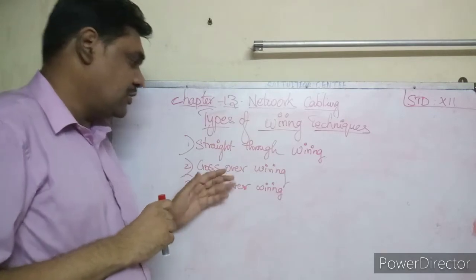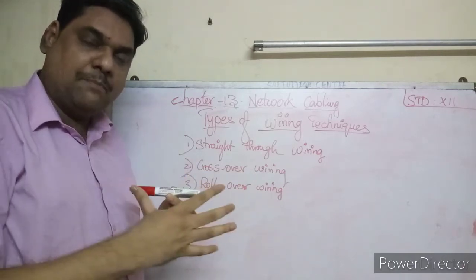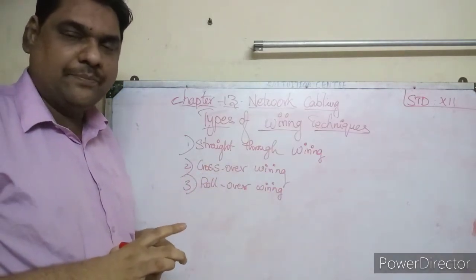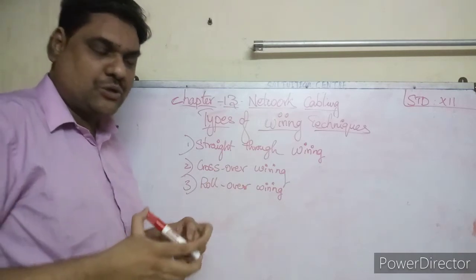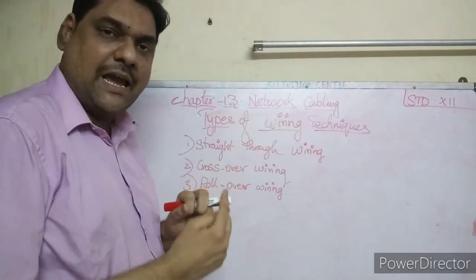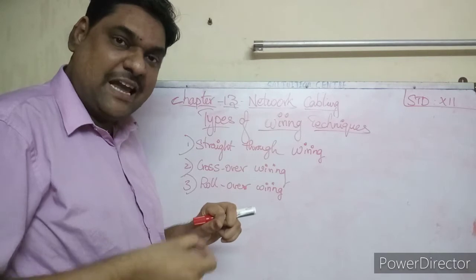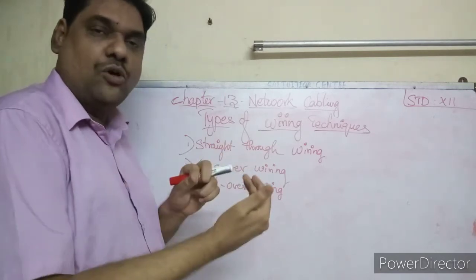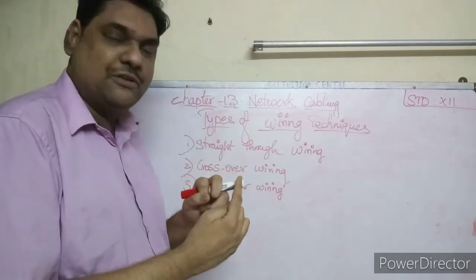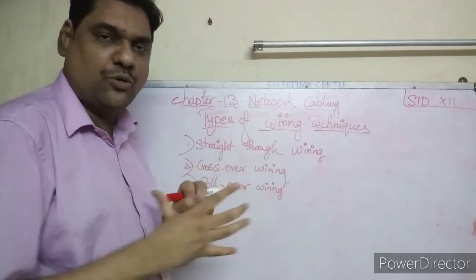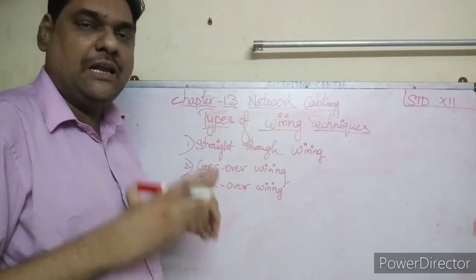In crossover wiring, when there is no modem or router in between, two computers can be connected directly. One end uses T568-A and the other end uses T568-B color code. It is called a cross-wire technique and is used to connect two computers directly without any modem or router in between.